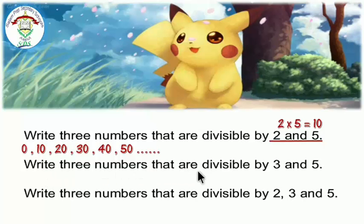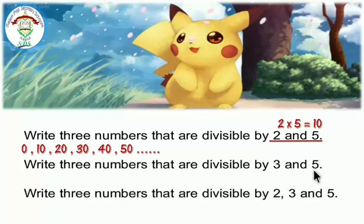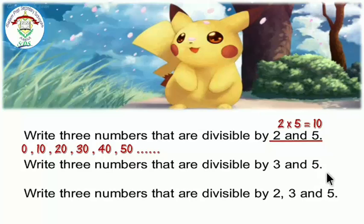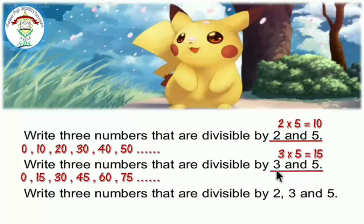Write 3 numbers that are divisible by 3 and 5. Divisible by means multiples of. 3 is not in the times table of 5, and 5 is not in the times table of 3 — there is no direct relation between 3 and 5. We need to find a common number for both, so we multiply 3 times 5 equals 15. 15 is a multiple of both 3 and 5, so we write multiples of 15.